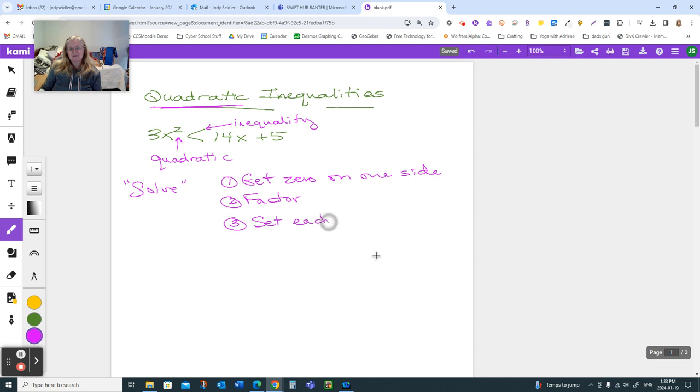After we factor it, set each factor equal to zero and solve for x, so then we'll have some x values. And here's where things are a little bit different because it's an inequality. When we solved equations, once we knew our x values, typically two x intercepts, right? Two x values, we were done. However, with an inequality, we're shading. We're either shading in between those or we're shading outside of those. And we figured that out in a couple of different ways. One way is to use a number line to identify and test for shading.